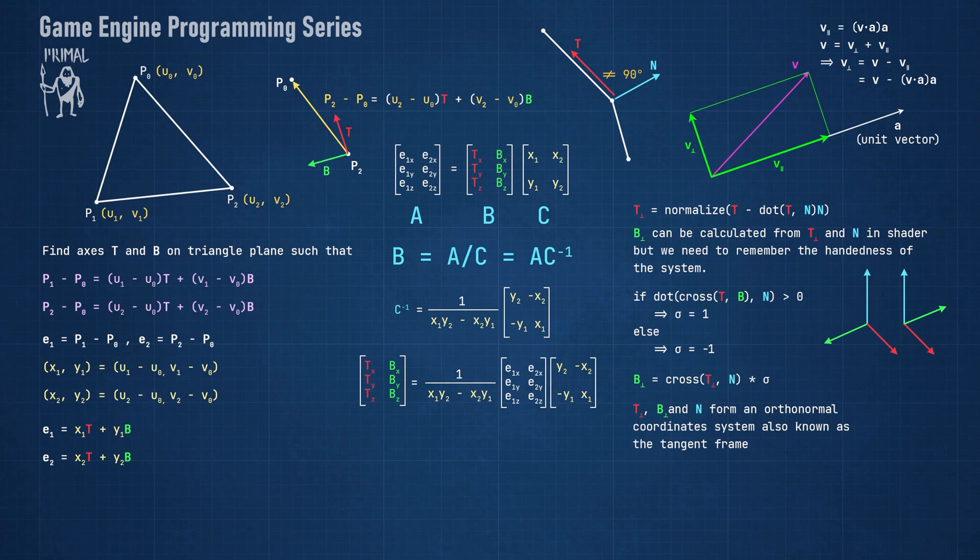The three vectors T, B and N form an orthonormal coordinate system where T stands for tangent vector and B stands for bitangent. As the naming suggests, both vectors are parallel or tangent to the polygon surface at the vertex for which we calculated the vectors. When a vertex is shared by multiple triangles, the vectors are averaged in the same way we averaged normal vectors. The interpolated tangent space is used as the basis for the normal vectors in a normal map.